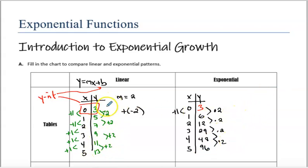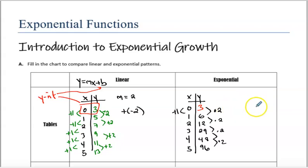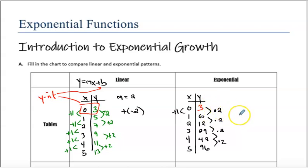So in the linear, I'm adding or subtracting by the same number every time as I increase my x's by 1. And in the exponential, I'm multiplying by a number — 2 or 3 or 4 — every time as I increase my x values by 1. I don't have to multiply by 2; I can multiply by 3, 5, or 10. I can also multiply by fractions, like 1/2 or 1/3 or 1/4. All of these are going to represent an exponential function. We'll see the differences between multiplying by a number greater than 1 versus a number between 0 and 1, and how that changes the graph.